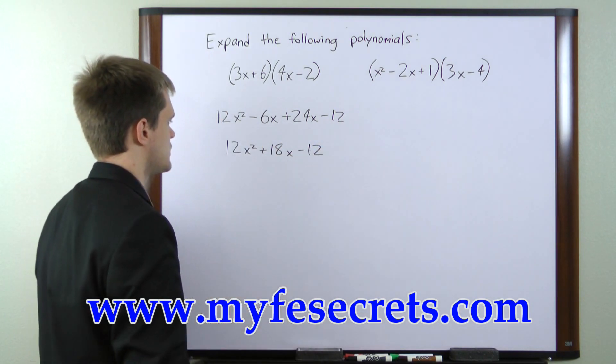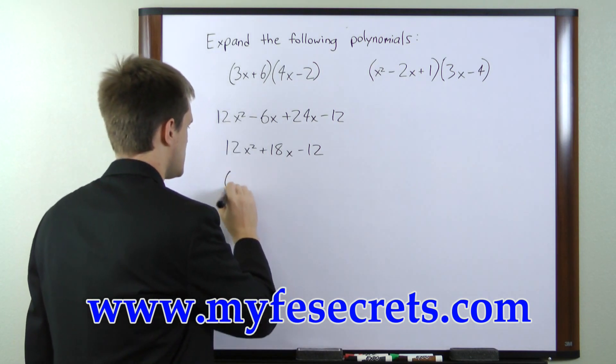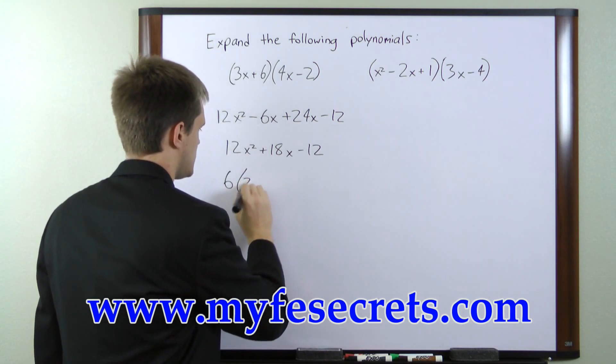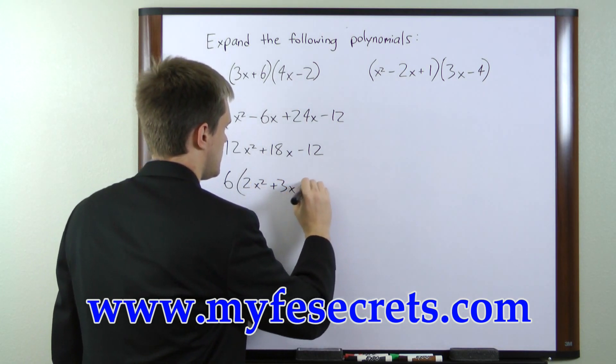Now each of these numbers is a multiple of 6, so we can pull a 6 outside of this expression. And that gives us 2x squared plus 3x minus 2.